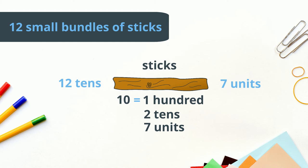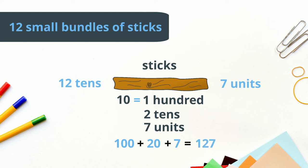Let's add them all together: one hundred plus twenty plus seven is equal to one hundred and twenty-seven. So in total there are 127 sticks on the floor.